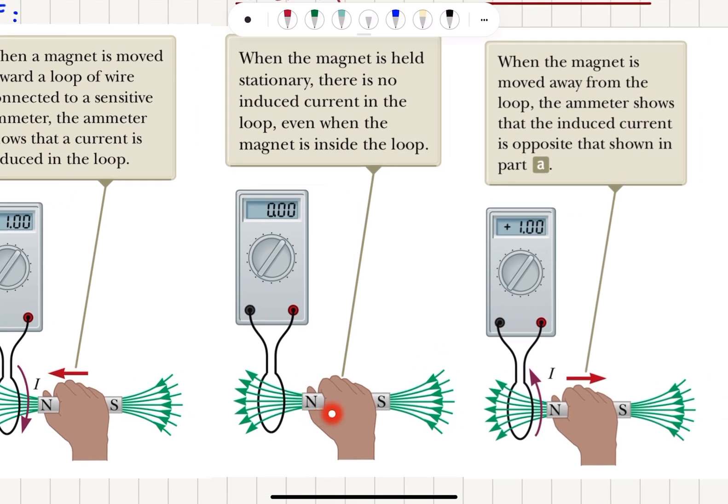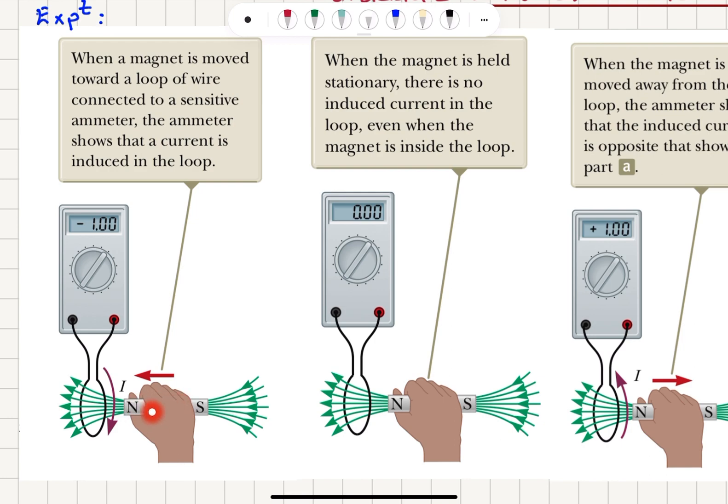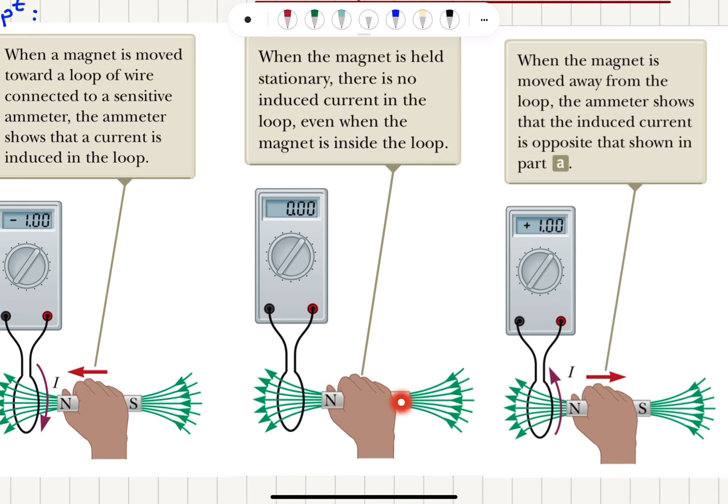When the magnet is held stationary, if we don't move it, if we stay at the position given here, there is no induced current in the loop even when the magnet is inside the loop.